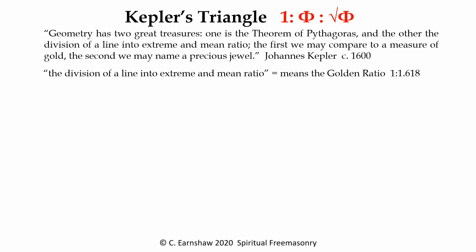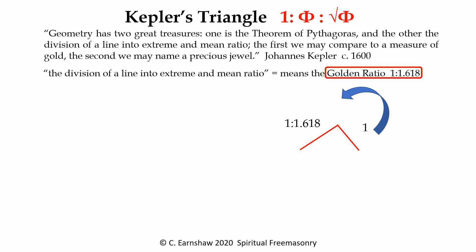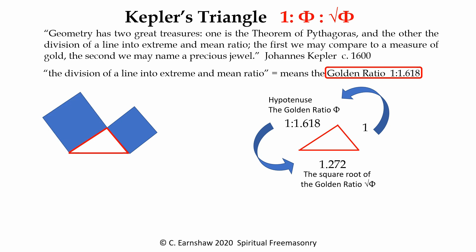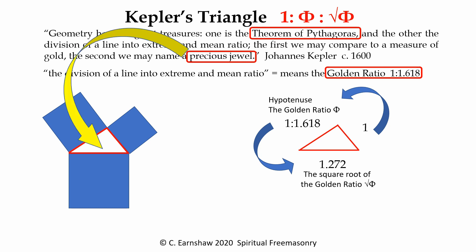First, you start with a line of value of one. From there you add the hypotenuse using the golden ratio. Next, find the second side using the root of the golden ratio. From here we can construct the Pythagorean theorem — we have discovered his precious jewel.